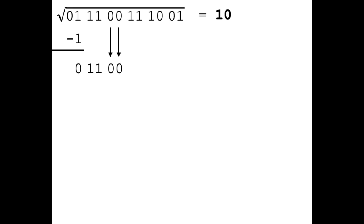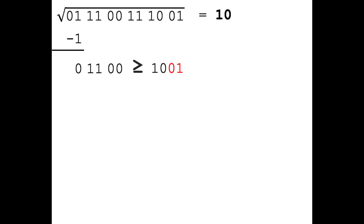And then we pull down the next pair of digits. Like before, we continue by taking the digits we have calculated so far and append the digits 0 and 1 to it. This produces the number 1001. Now we compare the remainder 1100 against the number we just constructed, 1001. This time, the remainder is greater than the constructed number, therefore the next digit will be 1.